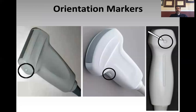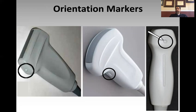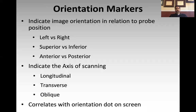I think you're all familiar with orientation markers, but let me talk about that quickly. The orientation markers are various markers on the probe and on the screen that help you orient your image. These are some examples of how various orientation markers appear on different probes — some are dots, some have a raised line or ridge as the orientation marker. The orientation marker gives you two things: it helps you orient your image in relation to the probe position — left and right, superior versus inferior, anterior versus posterior — all correlating with where the indicator on the probe is on the patient and where the dot is on the screen.